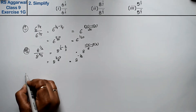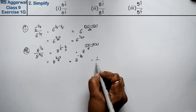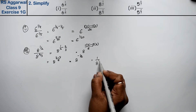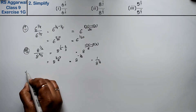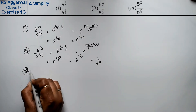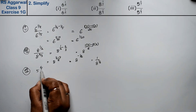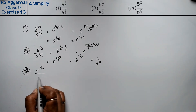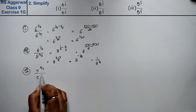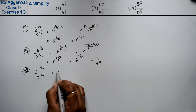And we can say that eight ki power minus one upon six is the answer. Aap chahein toh isko one upon eight ki power one upon six bhi likh sakte hain. Let's do the third part.